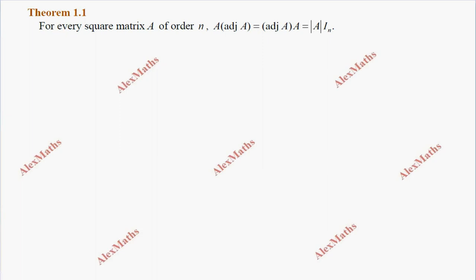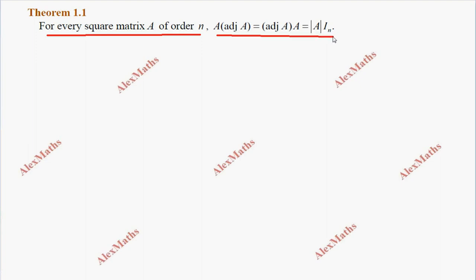Hi students, this is Alex here. Theorem 1.1: for every square matrix A of order n, we can prove that A into adjoint A, adjoint A into A, equals determinant A into identity matrix.